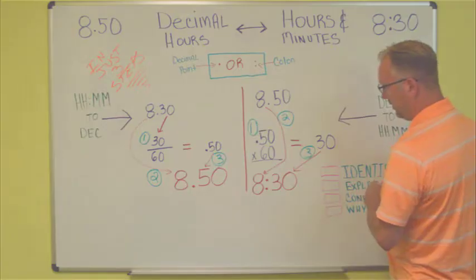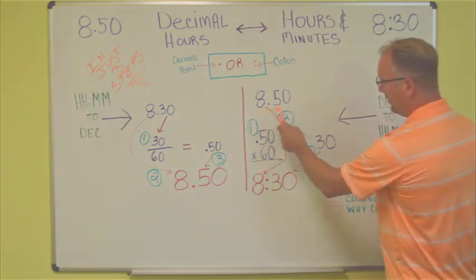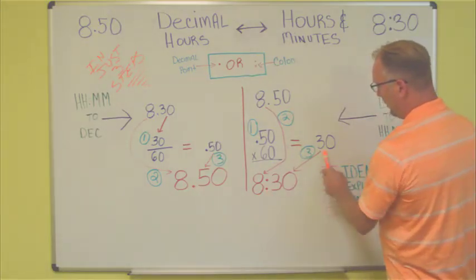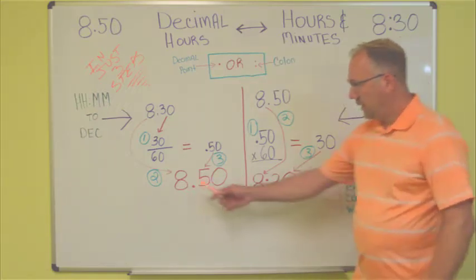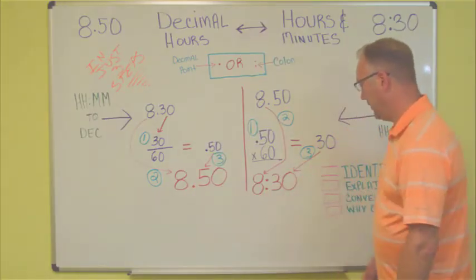In this case, it is actually 30 minutes. The second step will be to take the integer part, or the hours part, down, write that down, put in your colon. Third step is to take the minutes, move that down, so 8 hours and 30 minutes, 8 colon 30. 8.50 is exactly the same as 8 hours and 30 minutes.